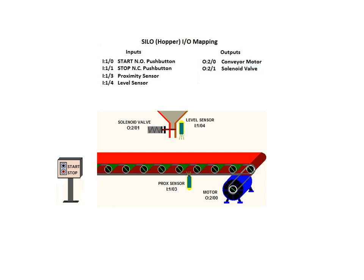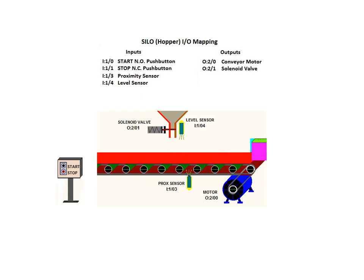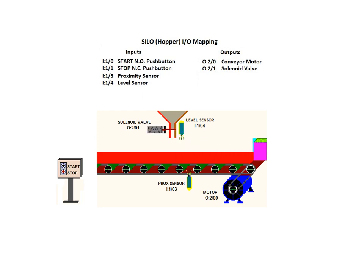It's time to move on and examine the program used to run the silo application. Here we have the cycle of events for the application. A container is brought to the filling station, the solenoid valve is opened, the container is filled to the desired level, and then the container is removed. The cycle is then repeated.